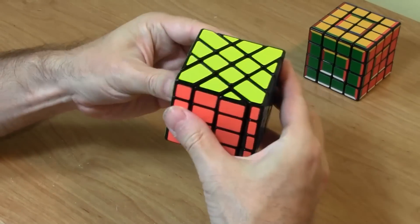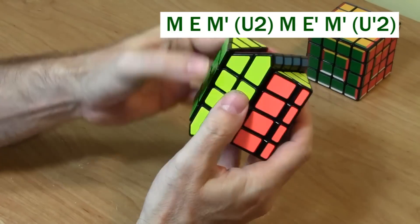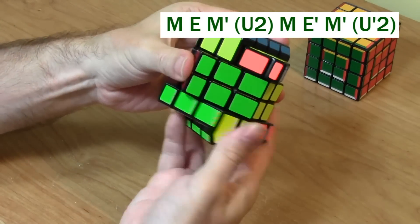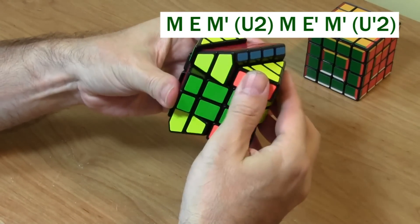So we'll just do the same thing. We'll do our M. We'll do our E. Okay, we'll do our M minus.